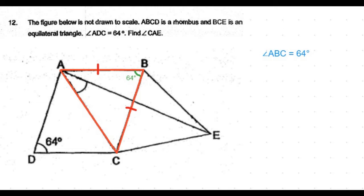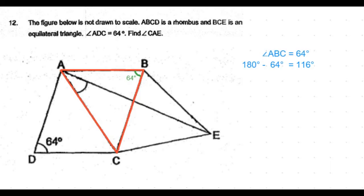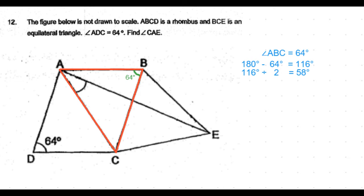Now that we know one angle in the isosceles triangle is 64 degrees, the other two angles are equal. So 180 minus 64 is 116 degrees. The other two angles are half of 116 degrees, which is 58 degrees.